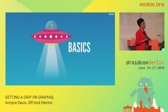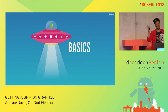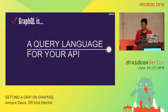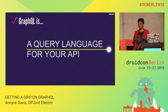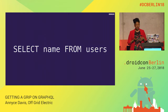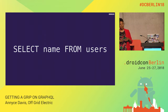Let's get started with the basics. We're going to look at three things that GraphQL is. First, GraphQL is a query language for your API. A query language is any kind of programming language that can request information and get it back in a certain format.